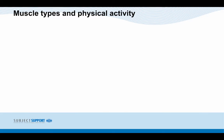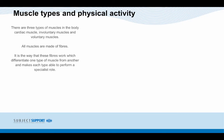Muscle types and physical activity. There are three types of muscles in the body: cardiac muscle, involuntary muscles and voluntary muscles. All muscles are made of fibres. It is the way these fibres work which differentiates one type of muscle from another and makes each type able to perform a specialist role.